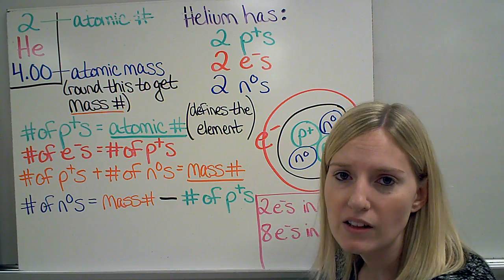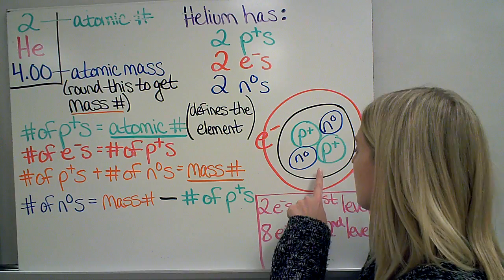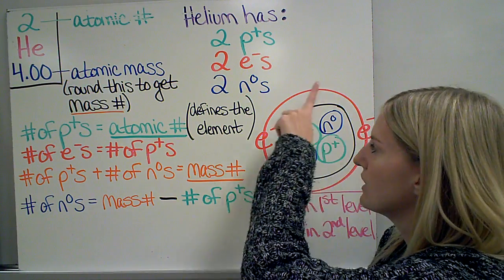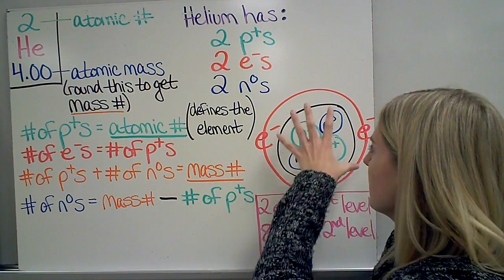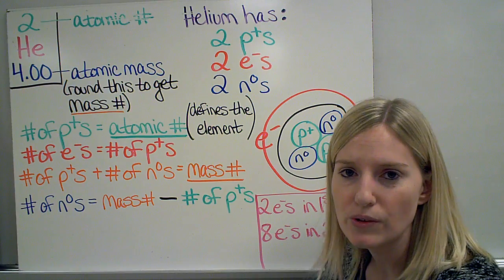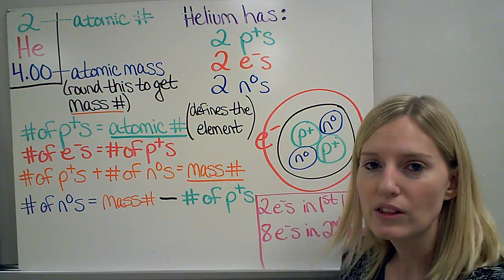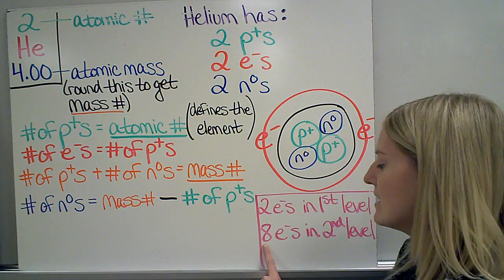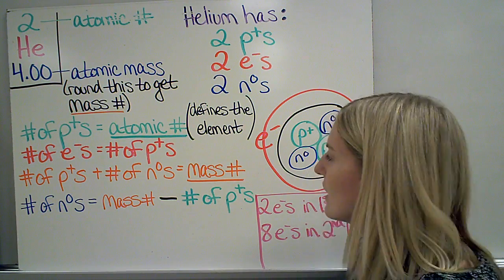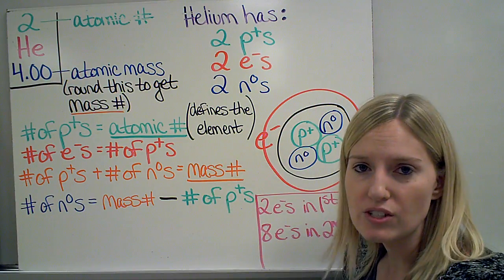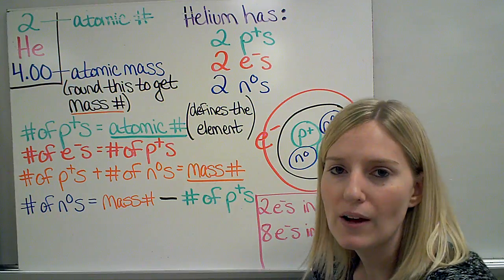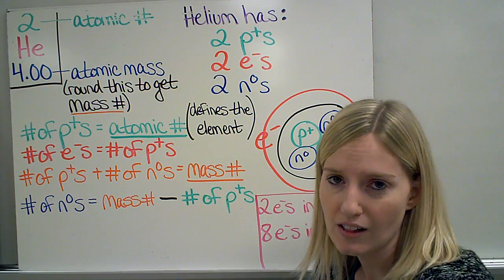Now I can draw a Bohr model of this. My protons and my neutrons go in the nucleus. My electrons go into the energy levels. I have my nucleus, and then I only have 1 energy level needed for those 2 electrons, because 2 electrons can go in the first energy level, 8 electrons can go in the second energy level. If I had more than 2 electrons, I would put the first 2 in this first energy level, and then I would need another energy level around that one to put any additional electrons.